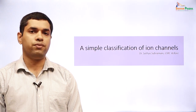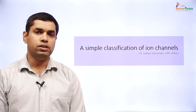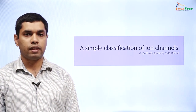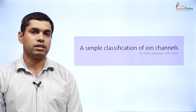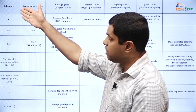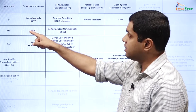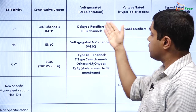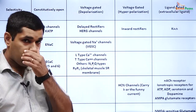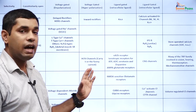We will now look at a classification of the different ion channels put together by Dr. Satya Subramani, which covers most of the ion channels encountered while studying human physiology. In this classification, the ion channels and their selectivity are in one column, and along the rows are the different ways each ion channel is gated. For example, potassium channels include open potassium channels which are constitutively open, voltage-gated by depolarization, or voltage-gated by hyperpolarization. This classification helps sort each ion channel in terms of both selectivity and gating.